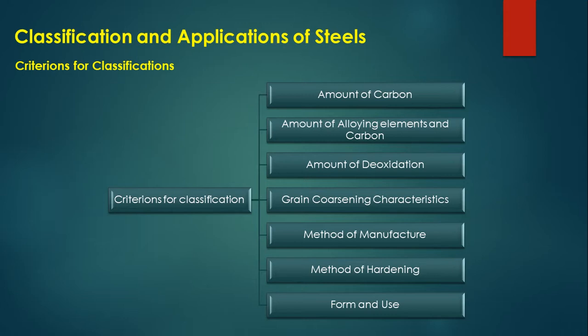Steels having less than 0.8% carbon are hypo-eutectoid steels, and those at 0.8% and above are hyper-eutectoid steels. Now, classification and applications of steels: the criteria for classification are seven in number.